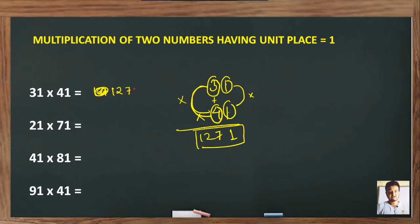Let's see 21 into 71. First, 1 into 1 is 1. Then 2 plus 7 is 9. Then multiply these two: 2 into 7 is 14. And this is your final answer: 1491.